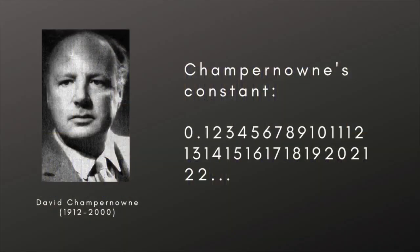The first example of a known normal number in base 10 was Champernowne's constant, named after the English economist and mathematician David Champernowne, who wrote about the significance of it while an undergraduate at Cambridge.